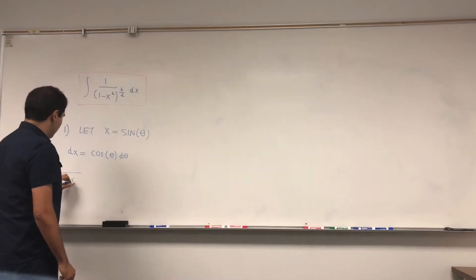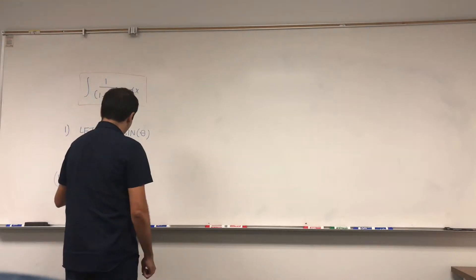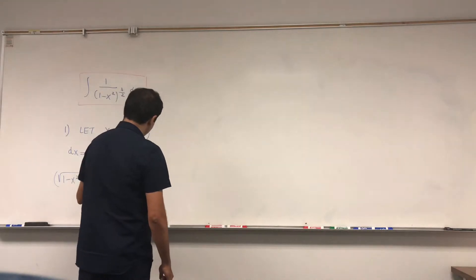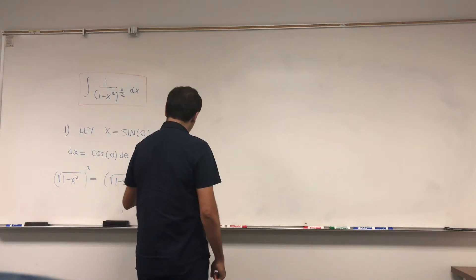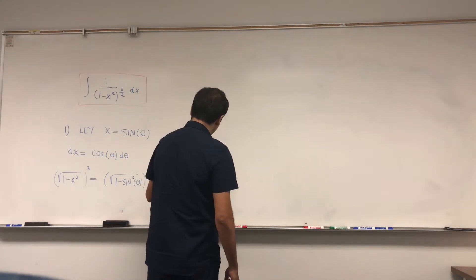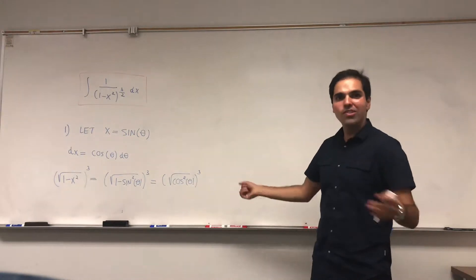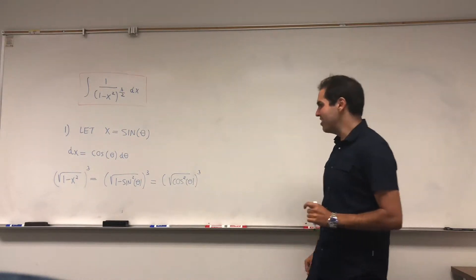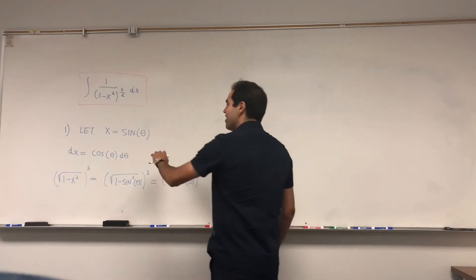Square root of 1 minus x squared cubed becomes square root of 1 minus sine squared cubed, and that becomes square root of cosine squared cubed since 1 minus sine squared is cosine squared. Usually square root of x squared is absolute value of x, but it turns out this cosine is positive.